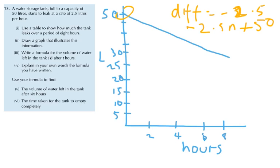If we rewrite our formula properly, like they're asking us to, I'm going to say V is equal to minus 2.5T plus 50. So for every hour, we're losing 2.5 litres. That's my formula.